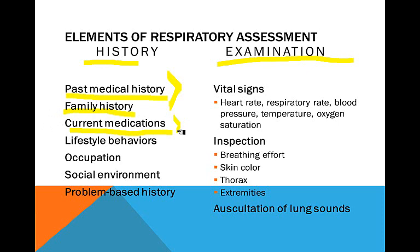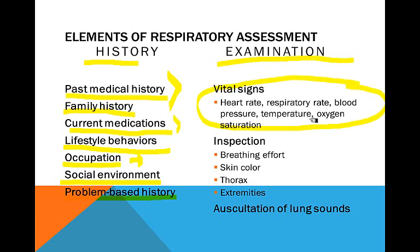What are their lifestyle behaviors — do they smoke? What's their occupation? If they work in a factory, they have a higher risk. Their social environment — do they live in crowded housing? And what's their problem-based history? Then take a look at their vital signs including oxygen saturation, breathing effort, work of breathing, their color, appearance, and thorax.